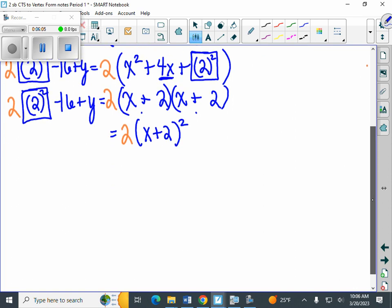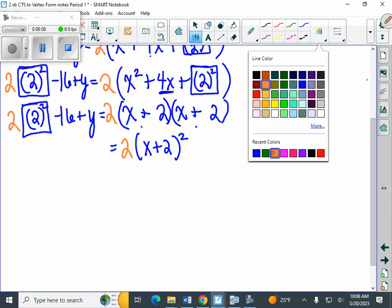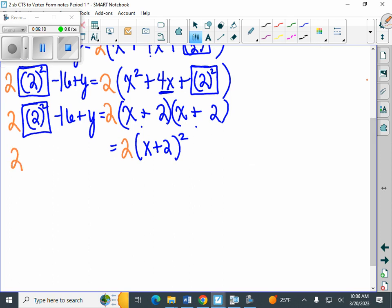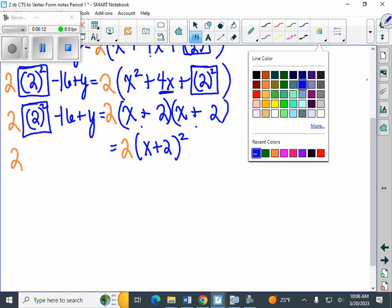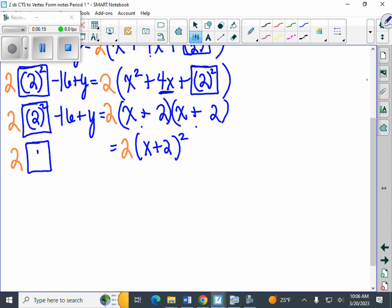And on the other side, we can simplify it a little bit. We still have that orange 2. But now we can deal with 2 squared. 2 squared means 2 times 2, which is 4. Minus 16 plus y.